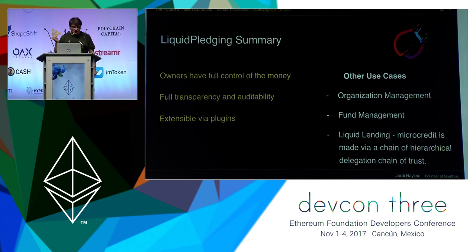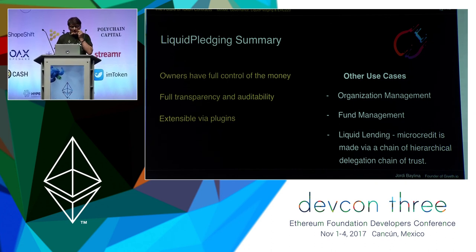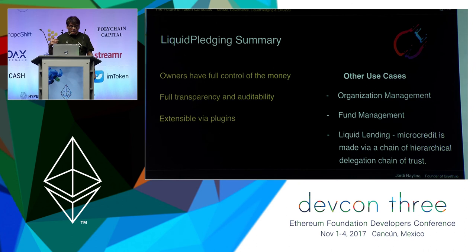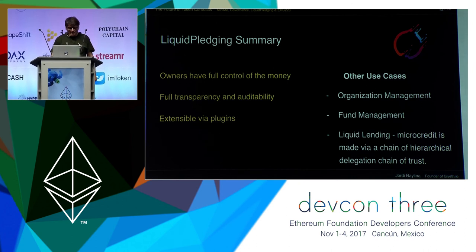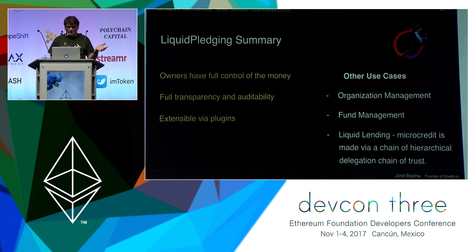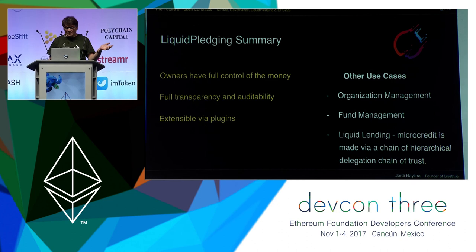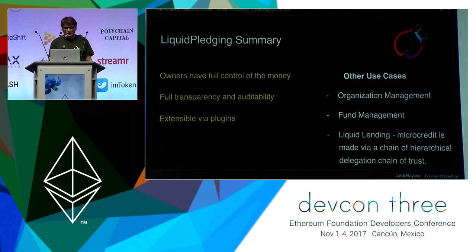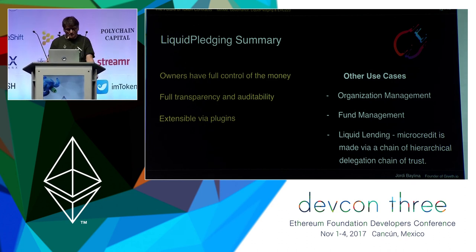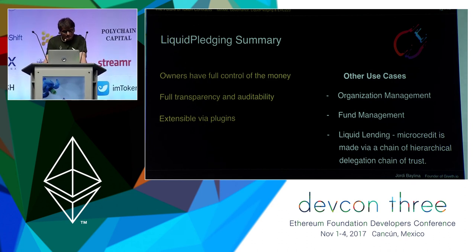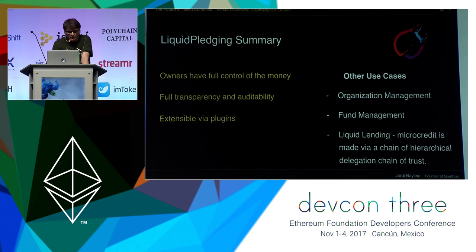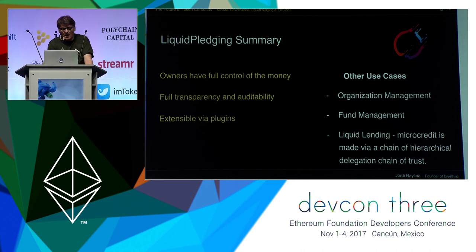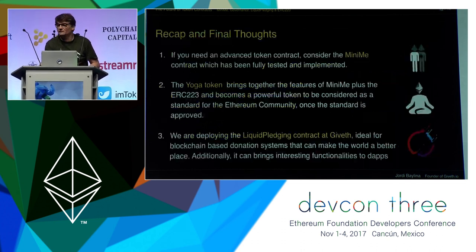There are many other great ideas. One that I like a lot is liquid lending. And by the way, this is being done by a startup from Mexico called Aurora Libre. In this concept, a microcredit is made via a hierarchical delegation chain of trust.